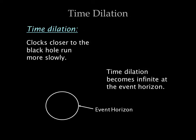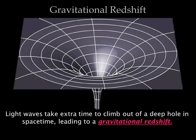What we are observing near the black hole are the effects of general relativity. The clock near the black hole appears to slow down because of time dilation. The clock appears to turn red because of a gravitational redshift — a redshift due to gravity rather than due to the Doppler effect.